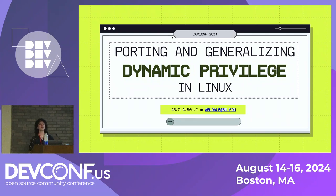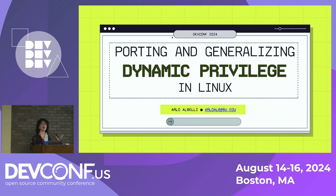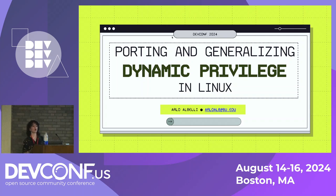Hi everybody. My name is Arlo Albelli. I am a fourth-year PhD student here at BU, and I'm also a Red Hat intern. I work on a project called Dynamic Privilege, which was actually originated with an elder PhD student of mine who was also a Red Hat intern, Tommy Unger. Today I'm going to be talking about our journey through porting the original implementation of Dynamic Privilege on the x86 architecture to 64-bit ARM, and also talk a little bit about what motivates us to do this work. I'm also going to nod to a hopefully upcoming RISC-V implementation.